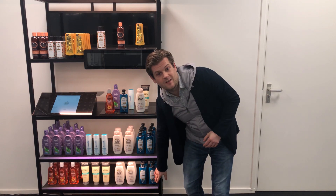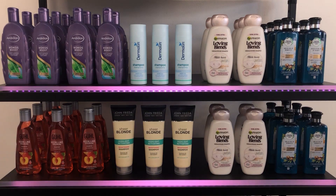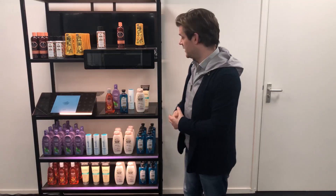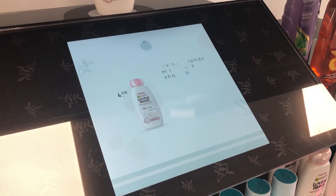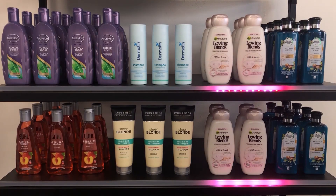We have rearranged the demo setup to give you a use case example for a retail application. We've added a RFID sensor and connected a second pixel LED strip to a Lightmark enabled interface. In this example with the shampoo bottles, per default the LED strips show a wave animation to attract customers. When a shopper places a shampoo bottle on the RFID platform, additional information is shown on the screen and the LEDs in the shelf indicate where the product is located.